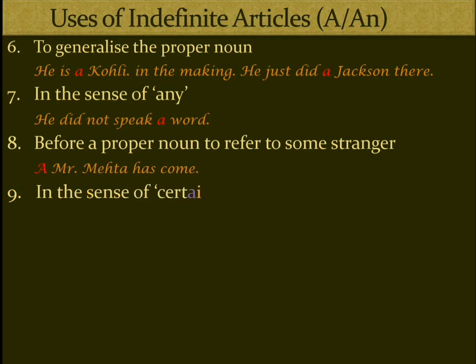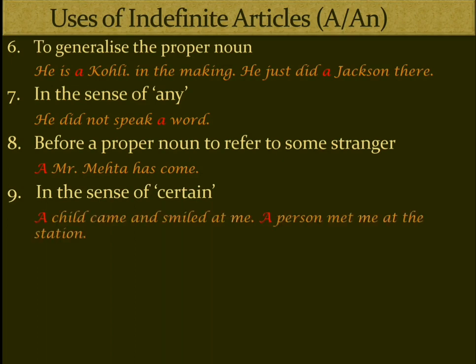Next is in the sense of 'certain'. For example, 'A child came and smiled at me' or 'A person met me at the station.' Here the article conveys a sense of 'a certain' person — someone specific enough that the event happened, but not precisely identified. So we use 'a' in this sense of 'certain'.